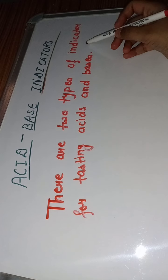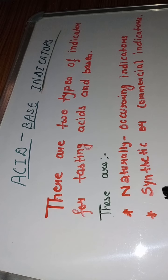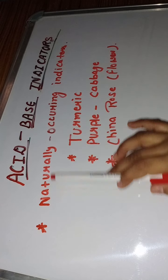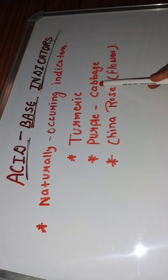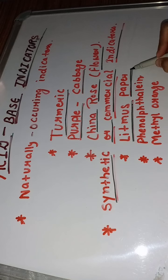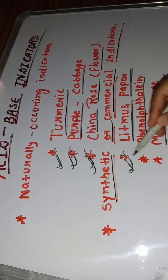There are two types of indicators for testing acid and base. These are naturally occurring indicators, and the second type is synthetic or commercial indicators. The examples of naturally occurring indicators are turmeric, purple cabbage, and china rose. Examples of synthetic or commercial indicators are litmus paper, phenolphthalein, and methyl orange.